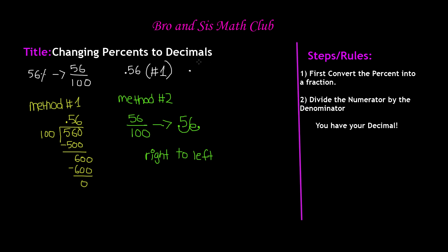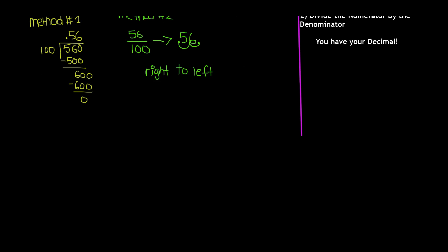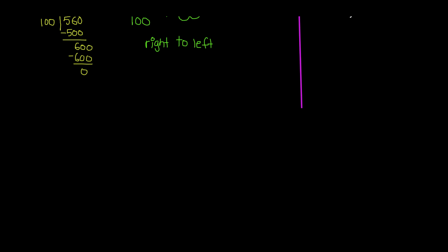Most people prefer method two because you really don't have to do all that division — just move the decimal from right to left. You'll still get the same answer, and you can use whichever method you prefer. So that's problem number one. Now let's do another example. Let's say we have 5%.